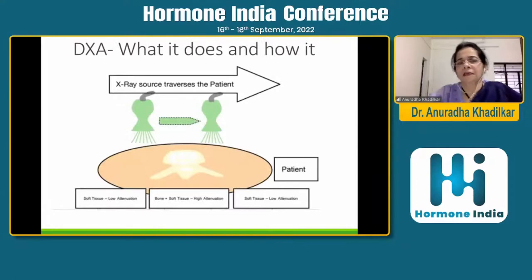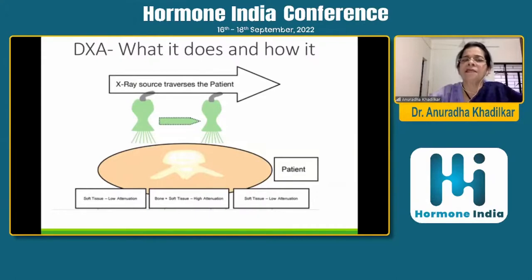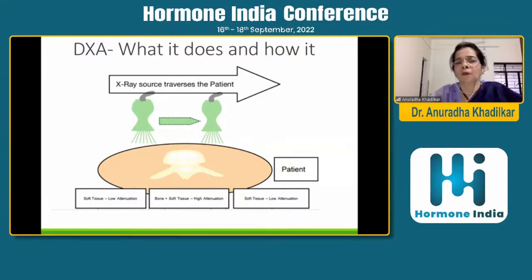DEXA stands for dual energy X-ray absorptometry. There are two X-ray sources, one high energy and one low energy. The attenuation is picked up and that is how the bone density is decided. The radiation is very, very minimal — there is no risk of doing DEXA in a child. You get much less radiation on a DEXA than you would when you're outside on the road.